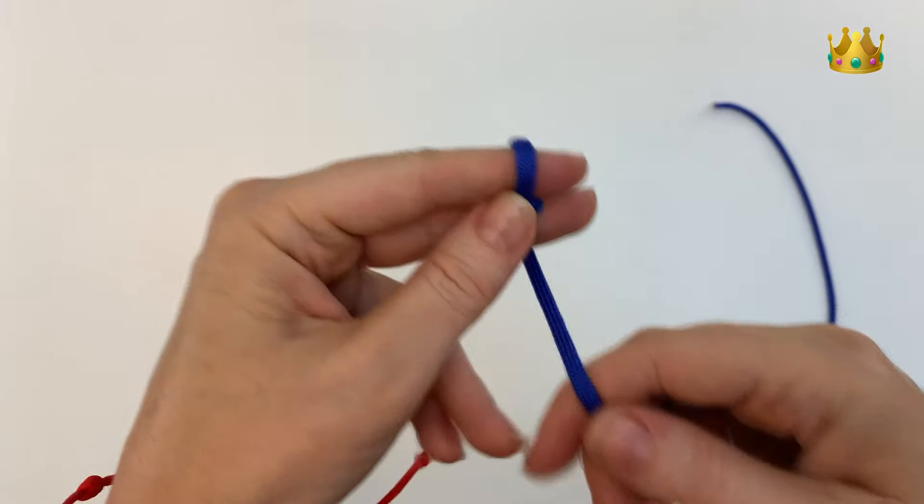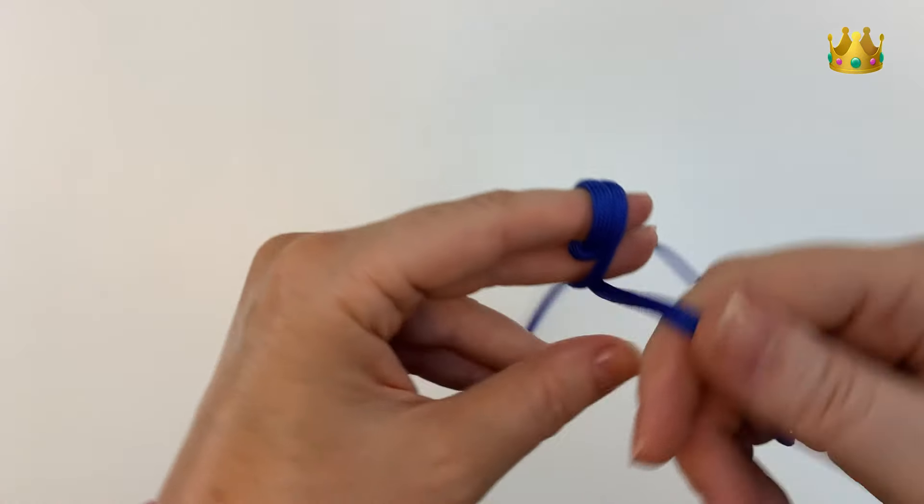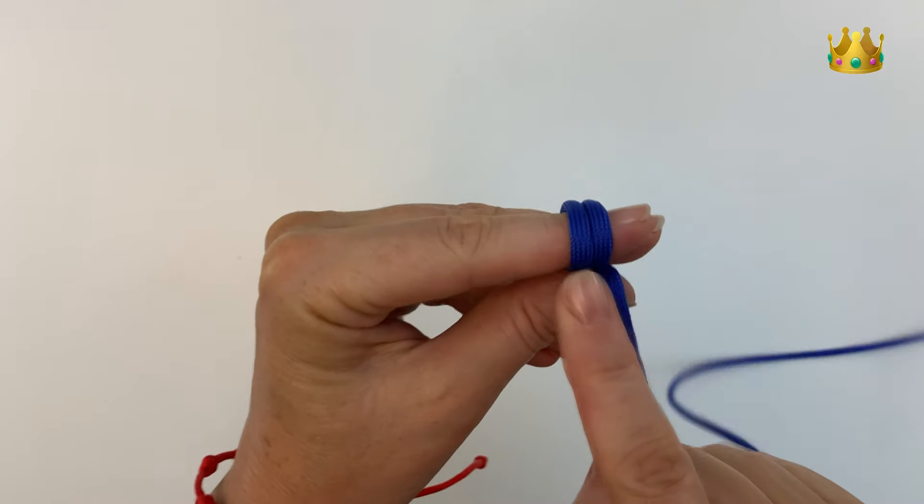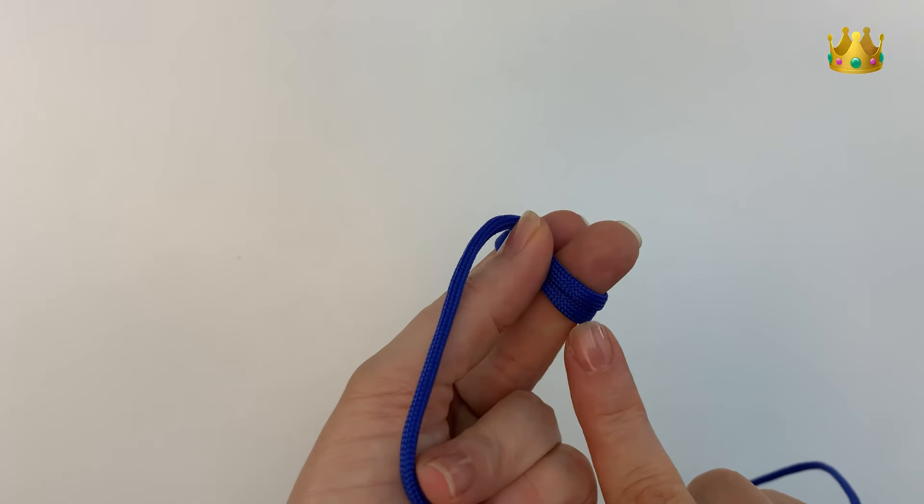Now we're going to wrap around in each direction two times. So you can see I've got two layers on the top here and two on the bottom.